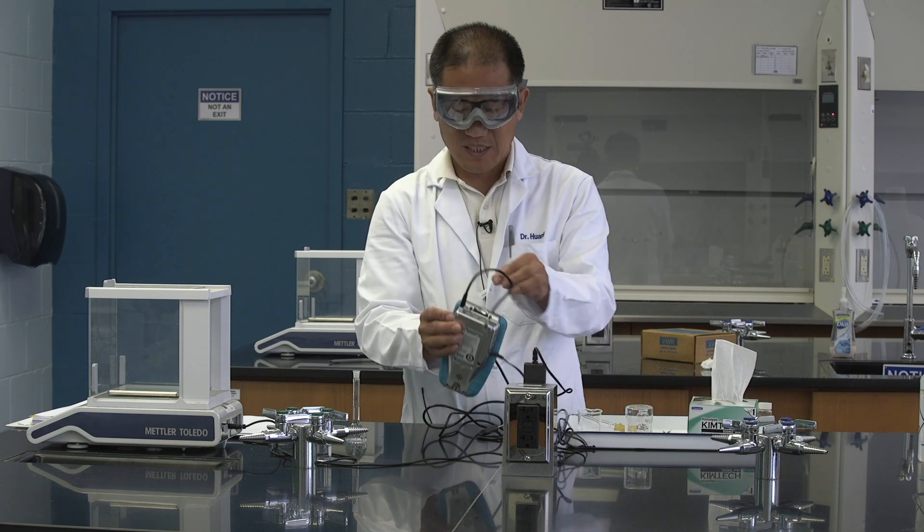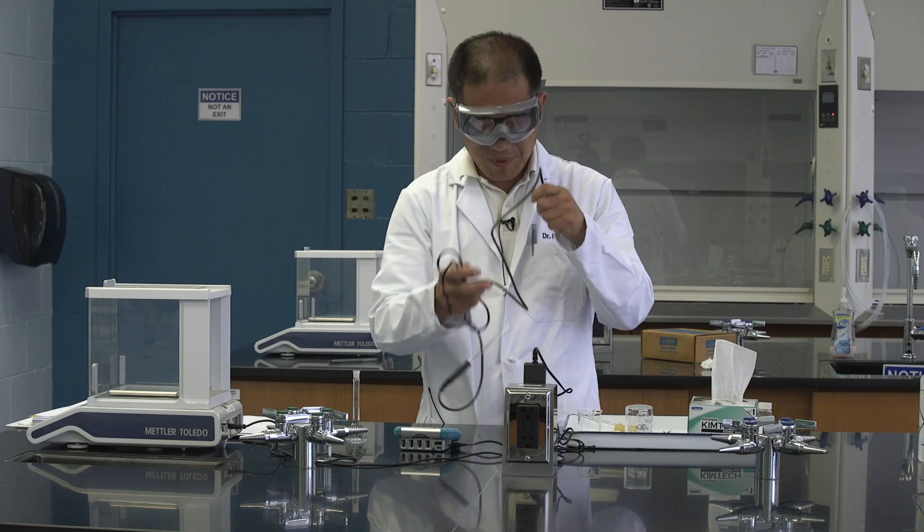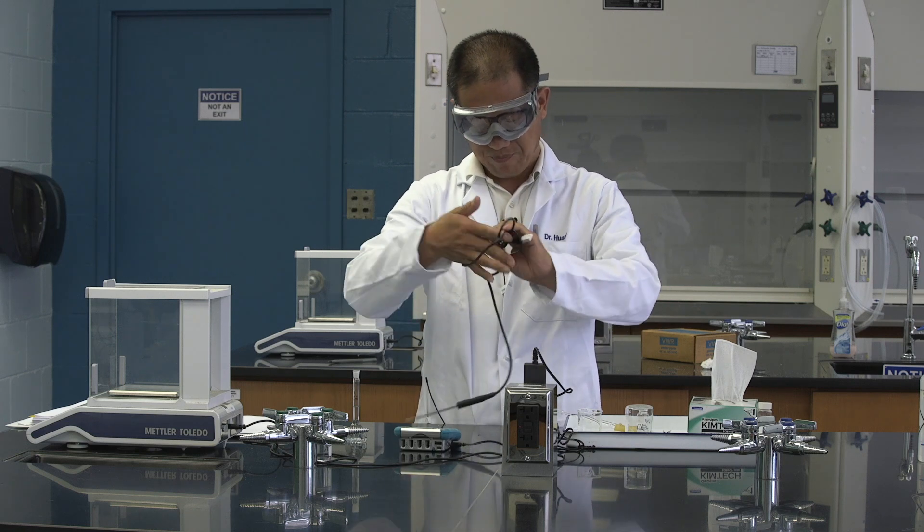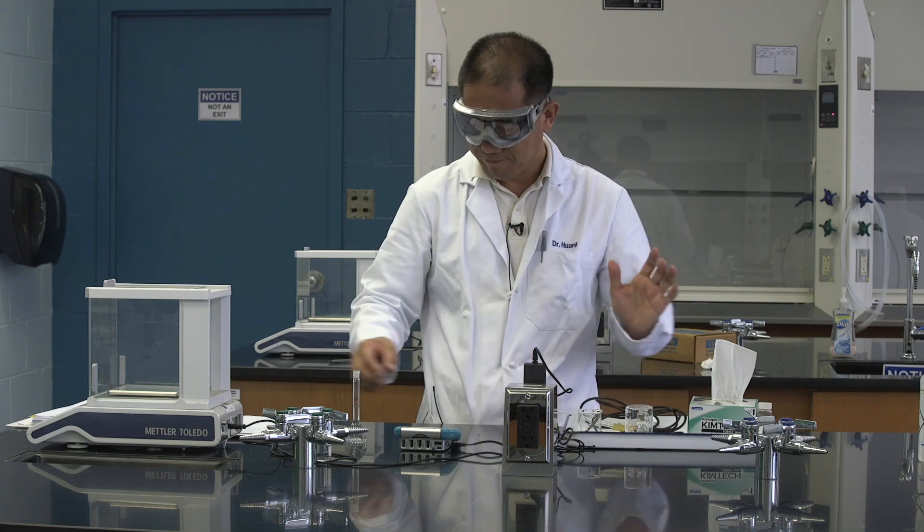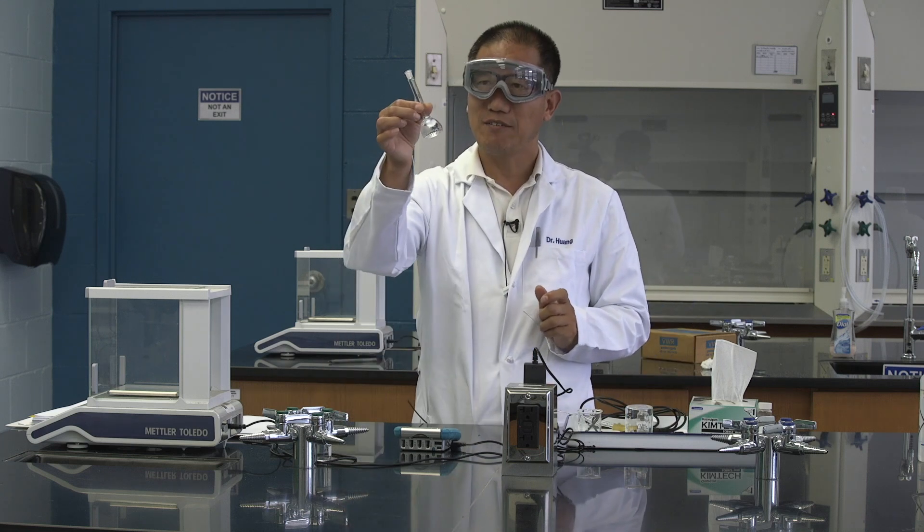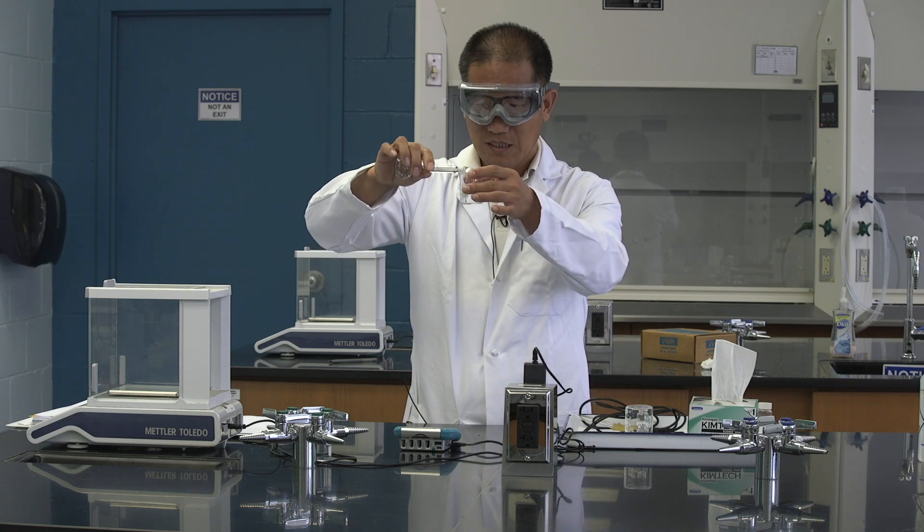At the end, do not forget to clean your mess. Otherwise, the lab manager will not be happy. This is what you should do for this experiment. Unplug the temperature probe and put them inside the tray. And then you have your unknown liquid here. Use a beaker. Try to dump out what you have. Make sure you only dump out the liquid.